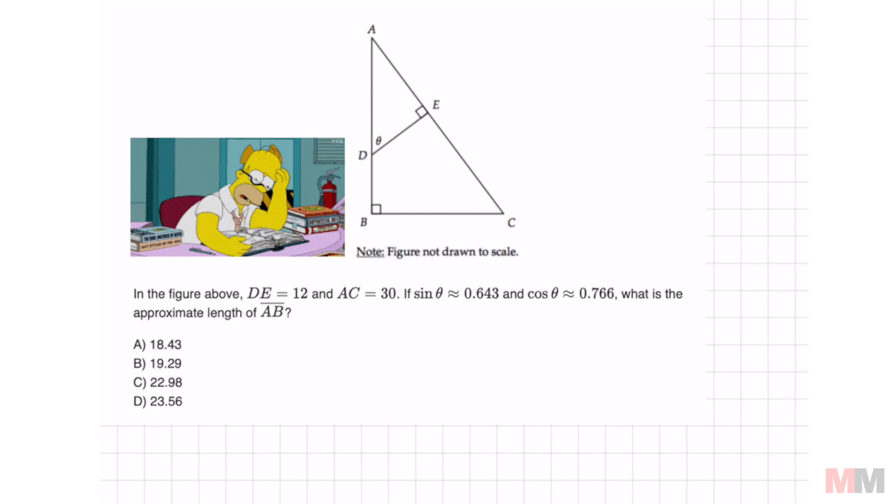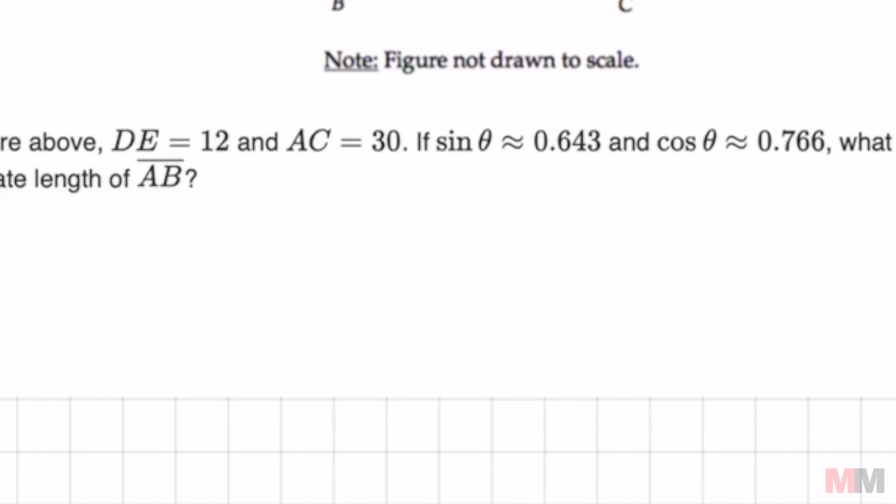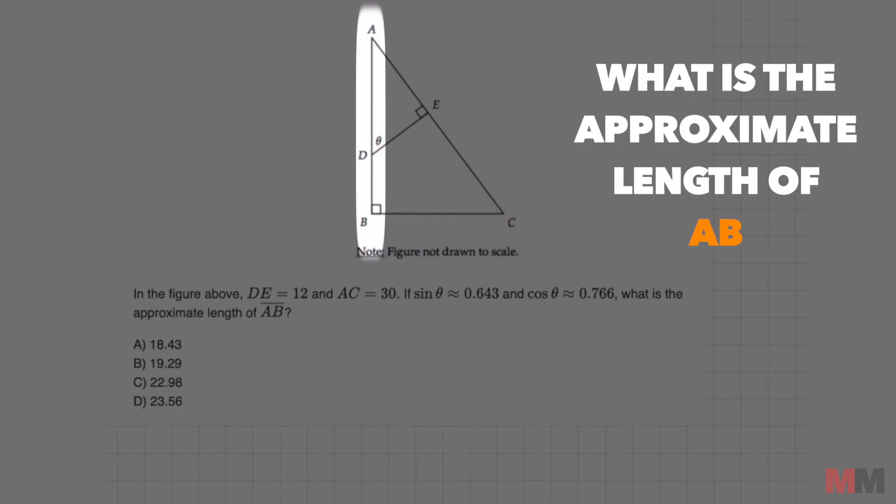Here's one of the tougher questions that I ran into on an SAT. We're given these four pieces of information and we are trying to find the approximate length of AB.